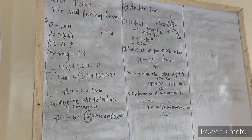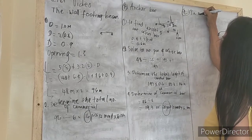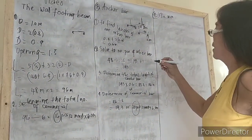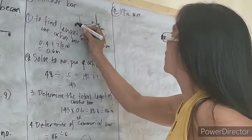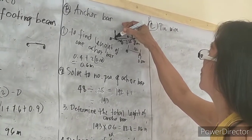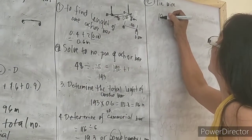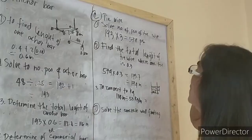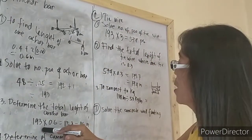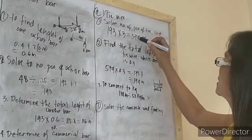We go now to the tie wires. Letter C is tie wire. To solve the tie wire, the number of pieces of bar times 3, because this is the perpendicular bar and we have a tie wire here. So 193 times 3 equals — the number of pieces is 579 pieces.